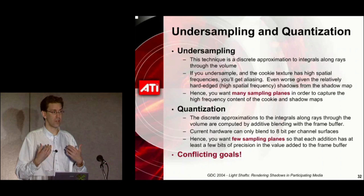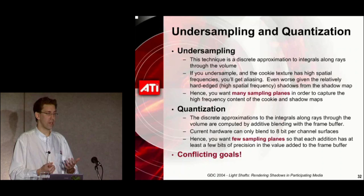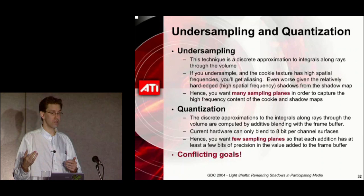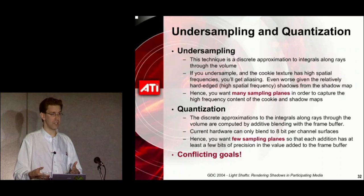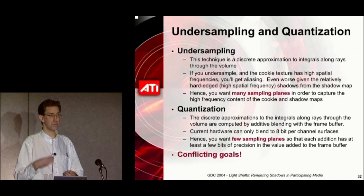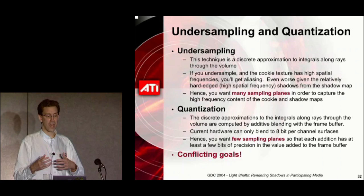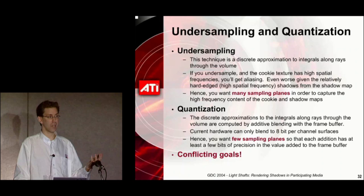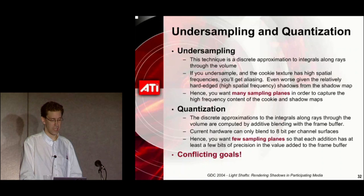However, on current hardware we can only render into an 8-bit-per-channel back buffer and still do additive alpha blending. That means we want to draw as few planes as possible so that each plane has the opportunity to add at least a couple of bits to the sum — otherwise we'll get really bad banding. So we have conflicting goals: we have to trade off between potentially undersampling the volume or having too few bits per sample leading to bad quantization.